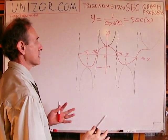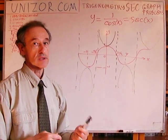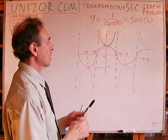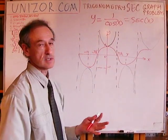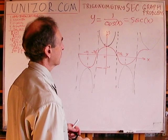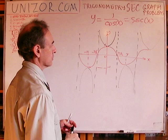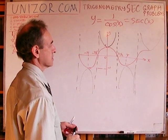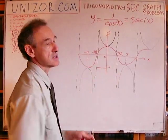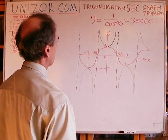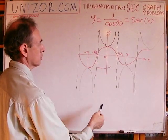Now let's talk about properties. First of all, cosine is an even function — it doesn't change value if you change the argument from positive to negative. Obviously, the same holds for the inverted cosine, which is secant: the function is even. It has exactly the same value for positive and negative arguments of the same absolute value, which is why the graph is symmetrical relative to the y-axis.